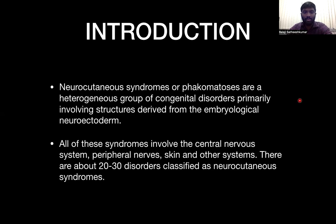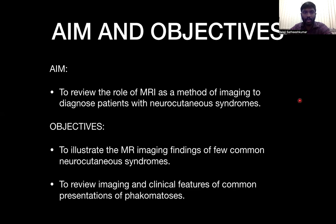Introduction. Neurocutaneous syndromes or phacomatosis are a heterogeneous group of congenital disorders primarily involving structures derived from the embryological neuroectoderm. All of these syndromes involve the central nervous system, peripheral nerves, skin and other systems. There are about 20 to 30 disorders classified as neurocutaneous syndromes. The aim is to review the role of MRI as a method of imaging to diagnose patients with neurocutaneous syndromes, and the objectives are to illustrate the MRI imaging findings of few common neurocutaneous syndromes and to review imaging and clinical features of common presentations of phacomatosis.